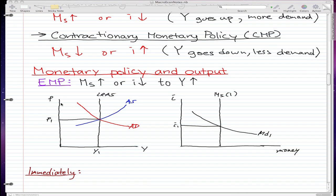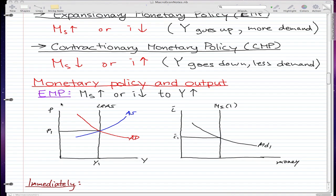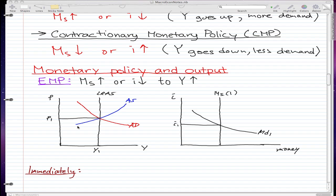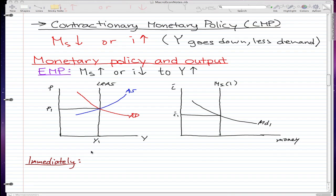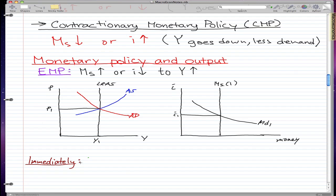Now in this video I'm going to talk about monetary policy and output, and we're specifically going to focus on expansionary monetary policy where MS increases or i decreases to increase the output. Here are two graphs that we're already familiar with, so I'm not going to explain them further. They're pretty much at equilibrium right now.